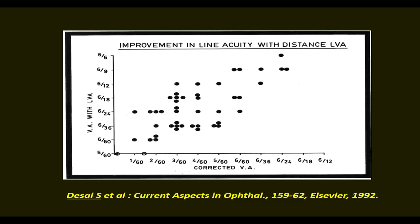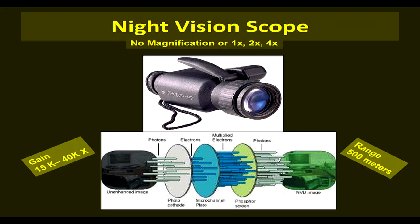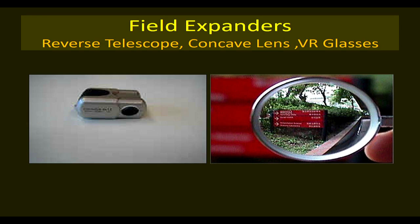Data from a study published by Dr. Sanjeev Desai shows how low vision aids increase distance visual acuity from 1/60 improved to 6/24, and 6/24 improved to 6/6. Night vision scopes are available with magnification of 1x, 2x, or 4x. We can also use field expanders for night blindness or retinitis pigmentosa patients — like reverse telescopes, concave lenses, and augmented reality glasses — increasing the visual field from 5 to 65 degrees.